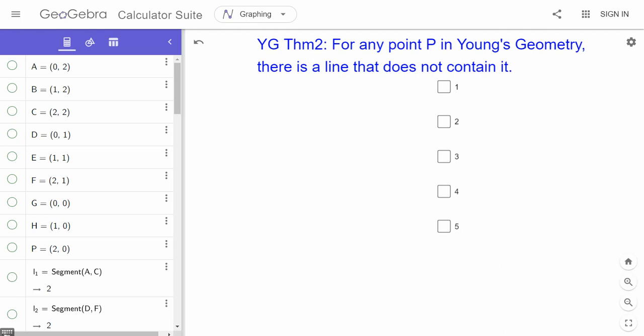Theorem 2 in Young's Geometry is a lemma that a student posed, and it's really helpful sometimes to be able to say that if I have a point P in Young's Geometry, I know there's a line somewhere in the geometry that does not contain it.